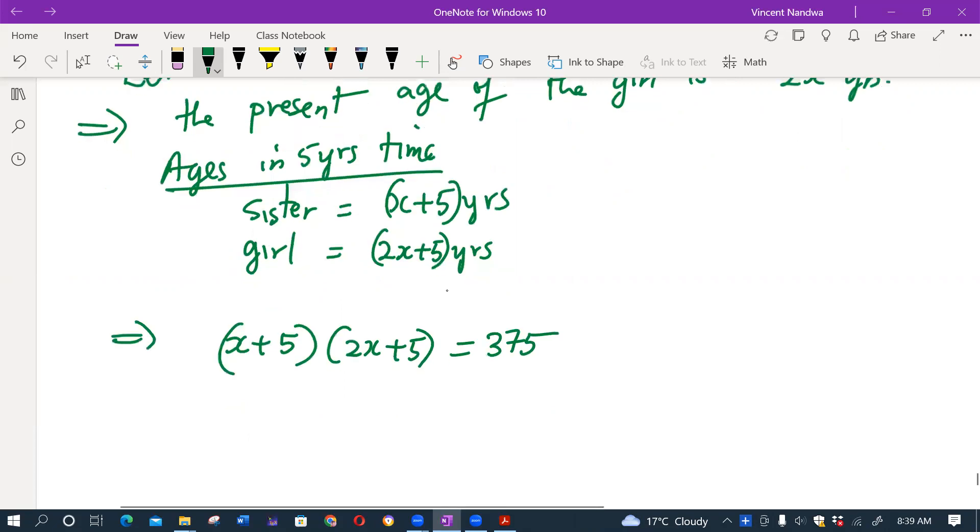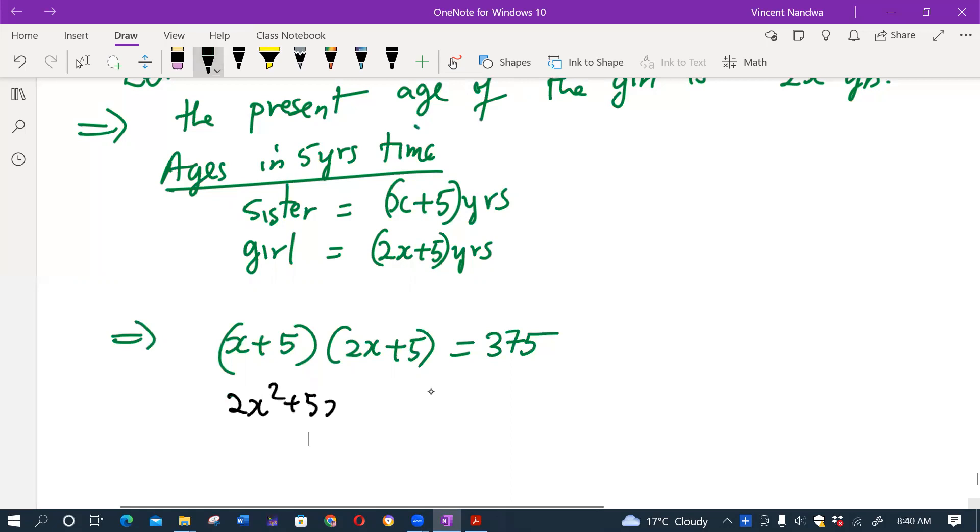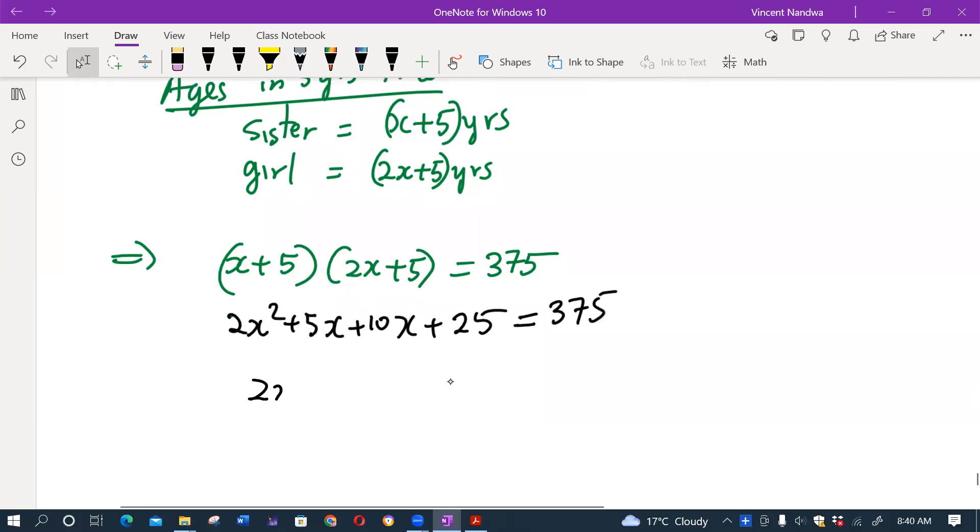So open the brackets. x times 2x is 2x squared, x times 5 is 5x. So 2x squared plus 5x plus 10x plus 25 equals 375. Therefore 2x squared plus 15x plus 25 minus 375 equals zero.